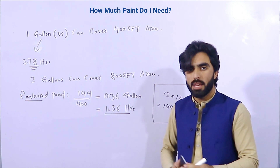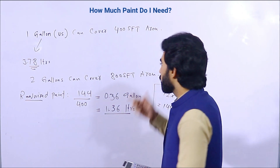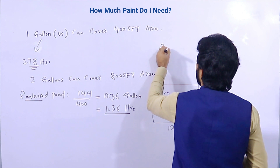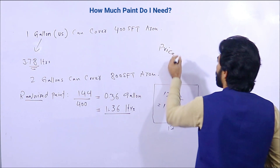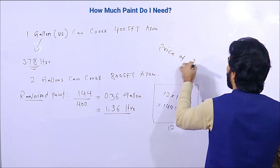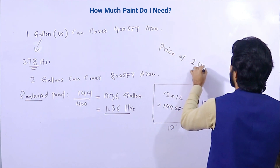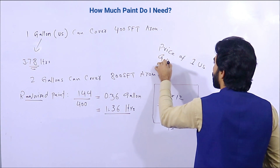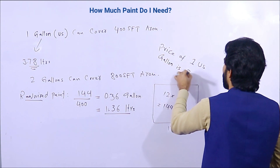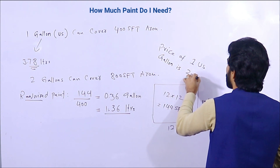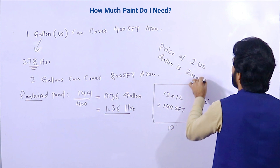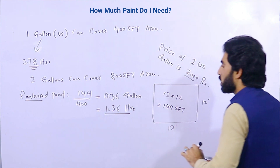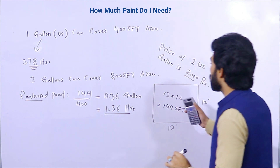Suppose the price of one US gallon is 2,000 Pakistani rupees. So for this wall you can calculate the cost based on the 0.36 gallon required.